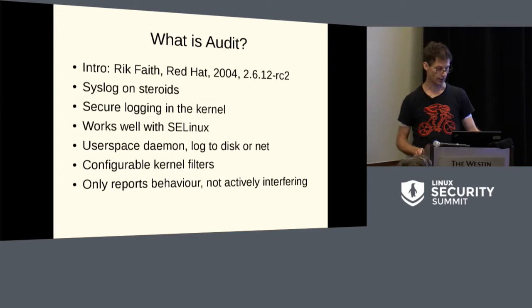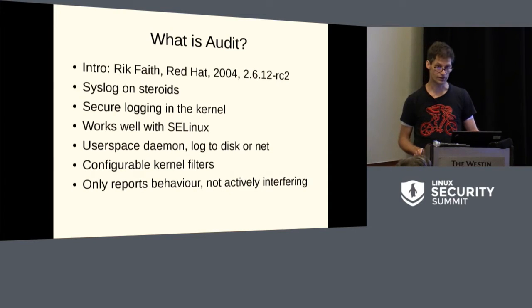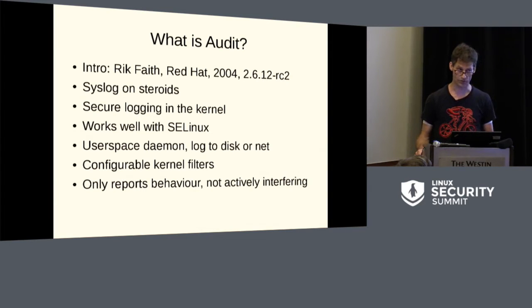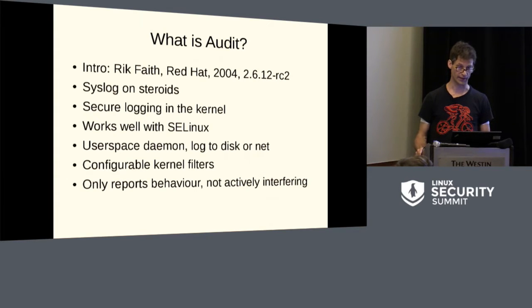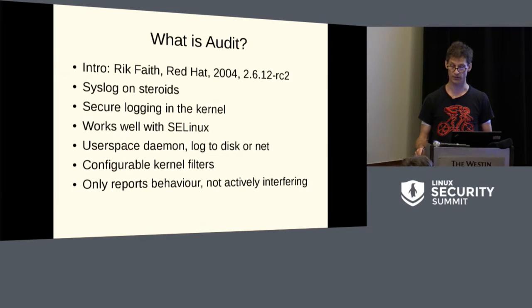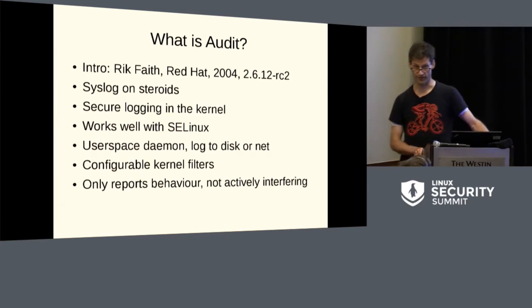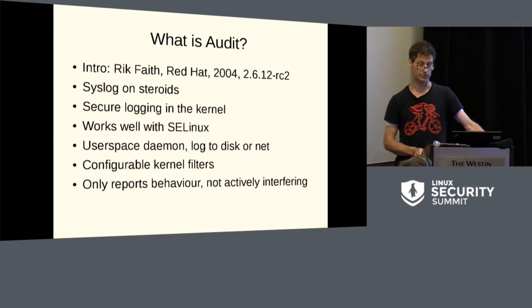There's a user space daemon which logs to disk or to net. Events are generated in the kernel itself, but there are also events generated by various user space tools that contact the kernel and queue things. There are configurable kernel filters so you can select what you actually want to see, get more detail on something, or ignore others. It only reports behavior — it doesn't actively interfere with the running system, with the exception that if it's unable to document what's going on, you can configure it to panic the kernel and stop it.